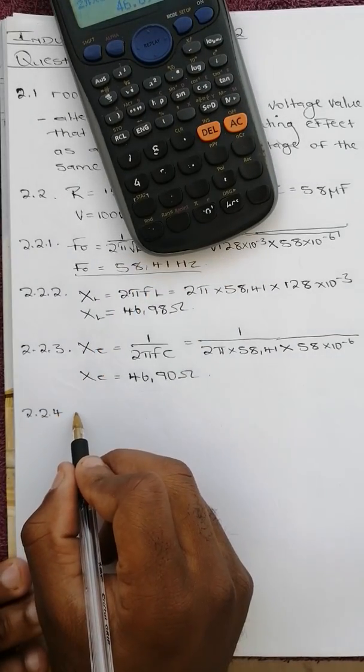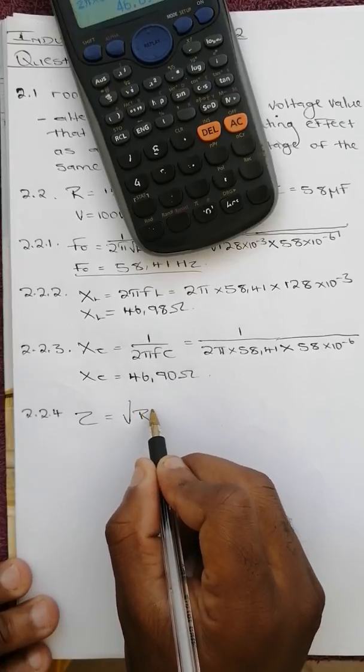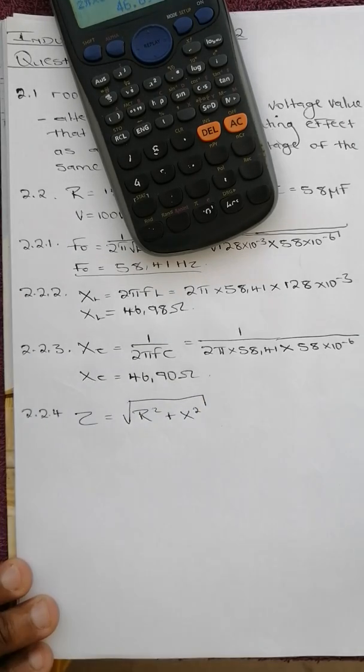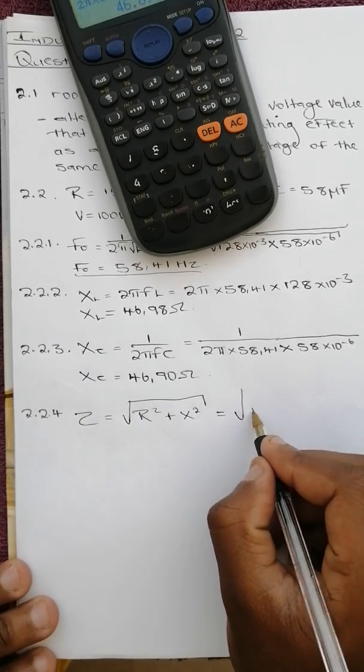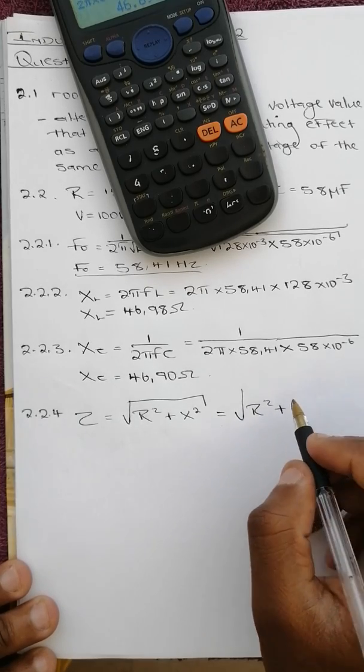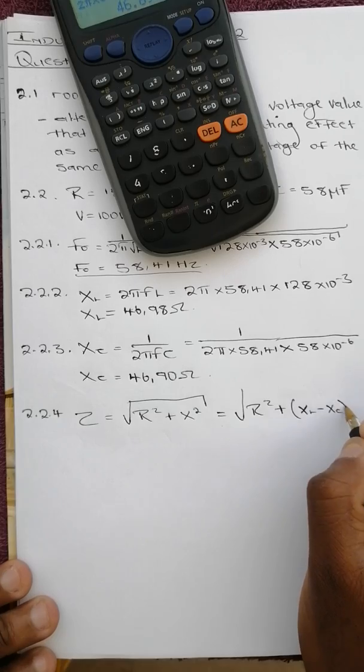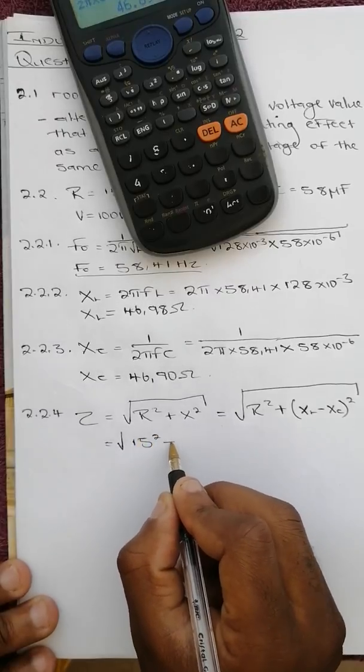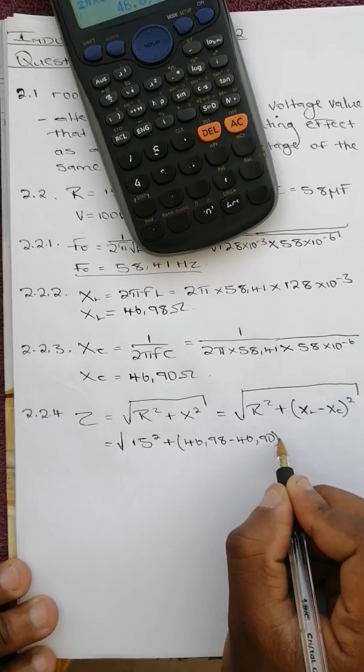Then 2.2.4 says calculate the impedance of the circuit. The impedance is given by Z equals square root of R squared plus X squared, but in this case we've got XL and XC, so it's going to be R squared plus we subtract the smaller one from the bigger one, so it's going to be XL minus XC squared. Substituting what we're given, it's going to be 15 squared plus 46.98 minus 46.90 squared, and we get 15 ohms.